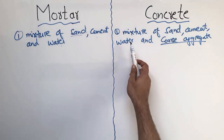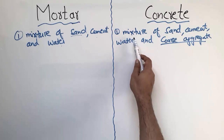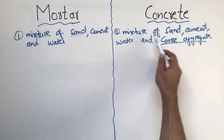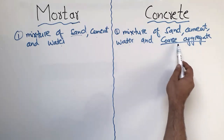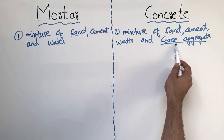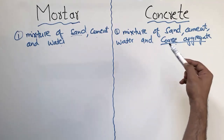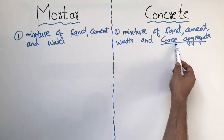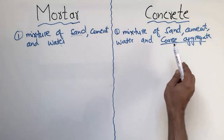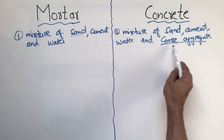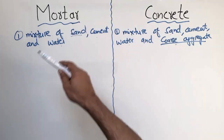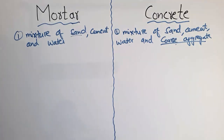Concrete is a composition of sand (fine aggregate), cement, water, and coarse aggregate. This coarse aggregate makes the concrete much stronger in comparison to mortar. So coarse aggregate plays an important role in differentiating concrete from mortar.